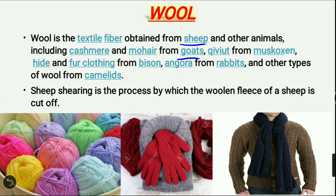Wool includes cashmere and mohair from goats, qiviut from musk oxen, hide and fur clothing from bison, angora from rabbits, and other types of wool from camelids. Shearing is the process by which the wool fleece of a sheep is cut off.